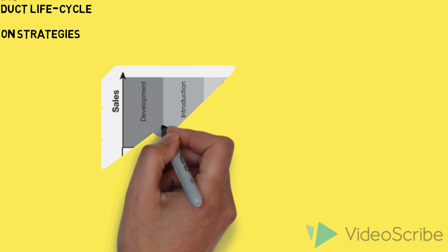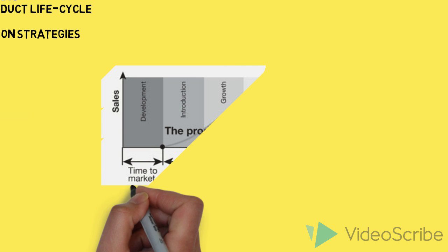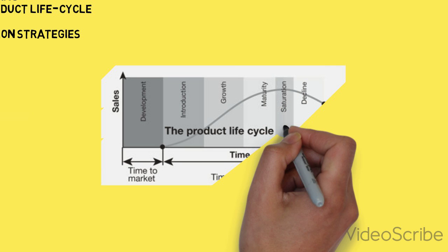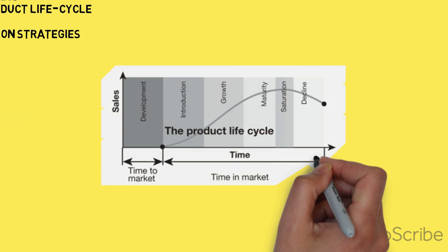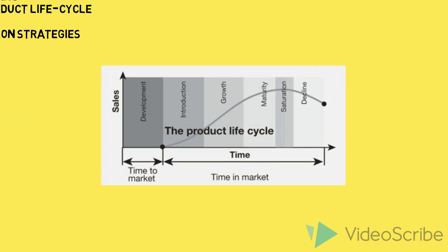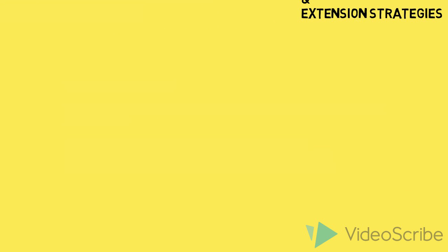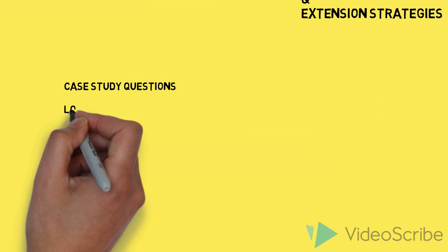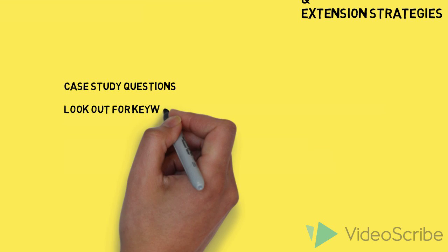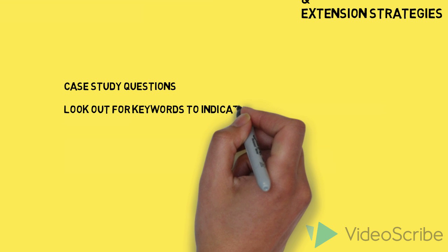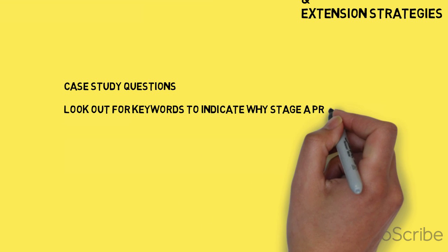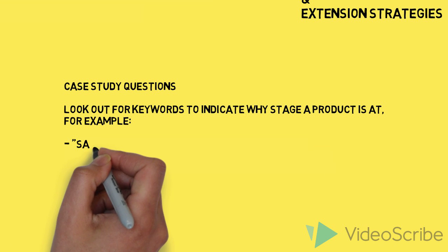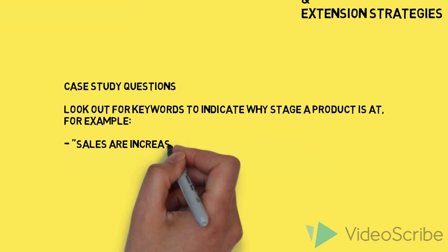We use a diagram — the product life cycle — to show the life of a product. We stick with our six stages even at National 5 to ensure we fully understand the six steps. In the National 5 or Higher exam, you may be asked to use the case study to work out which stage of the product life cycle a particular product is at. I would recommend that you look for keywords or phrases to help you.